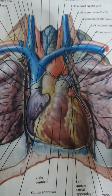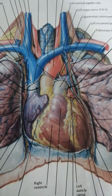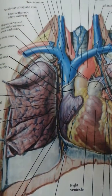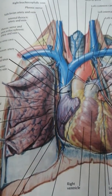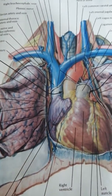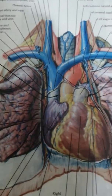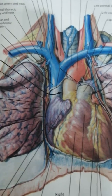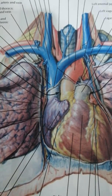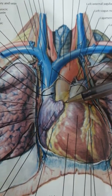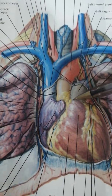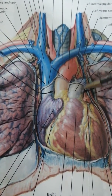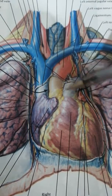Because the ascending aorta is moving towards the right, it has anterior relations with the right lung and the right pleura. To reiterate, most of the relations are from the right side of the thorax, including the right auricle, the infundibulum of the right ventricle, as well as the pulmonary trunk — the root of which is overlapping somewhat.